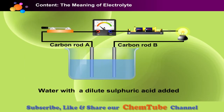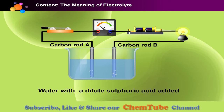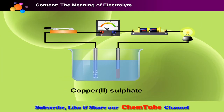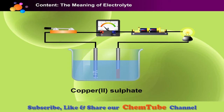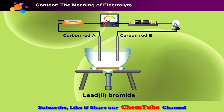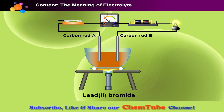The ability of water with dilute sulfuric acid added to allow electricity to pass through and undergo chemical changes makes it an electrolyte. Strong acid and copper sulfate solution, as well as molten lead(II) bromide, are also electrolytes. As electric current passes through an electrolyte, the electrolyte is broken down into its constituent elements. This process is called electrolysis.